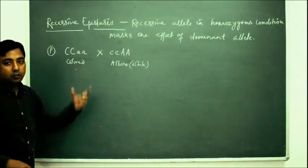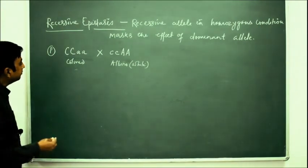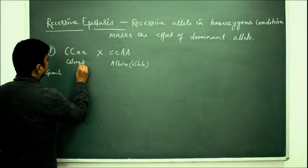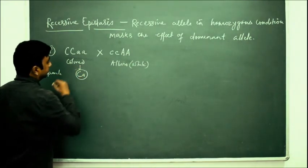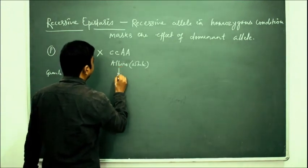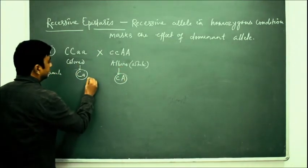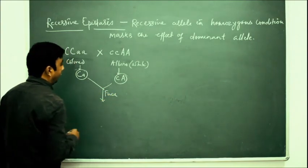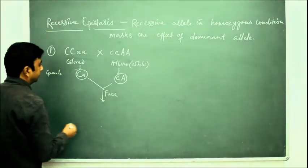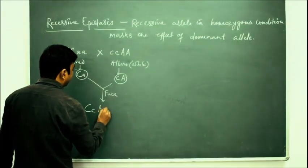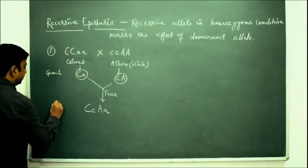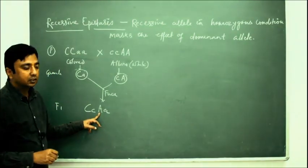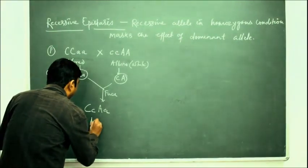These are two parents. When we form gametes, from the colored parent we get capital C, small a, and from the albino parent we get small c, capital A. These two will fuse and we get the F1 generation: capital C small c, capital A small a. Since capital A is present, it will be agouti.